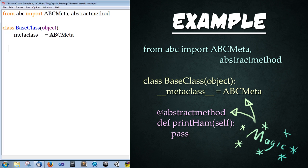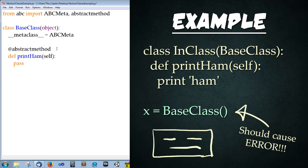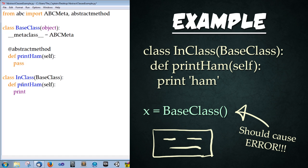After that, type the @abstractmethod decorator. Press enter and then type def print_ham with self as the argument, colon, enter, and just type pass. Now we're going to unindent and create the inheriting class. Type class, inherit from the base class, colon, enter, and then redefine print_ham. Type def print_ham, open parentheses, self, close parentheses, colon, enter, print, and then 'ham'. Let's go ahead and test this out to see if it's working. Type x equals BaseClass to see if we can create an instance of the base class — we should expect to find an error.